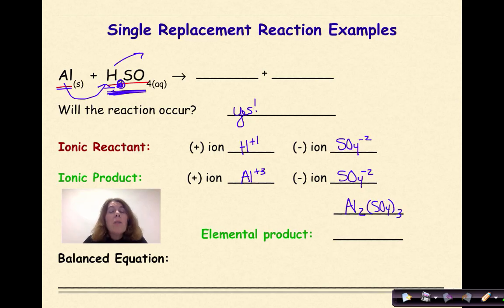And our elemental product here, this is key, is going to be H2 because it is diatomic hydrogen. And this is critical, critical to write it as diatomic hydrogen because now we need to balance this thing.